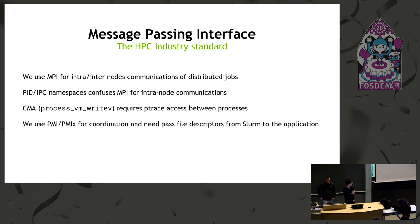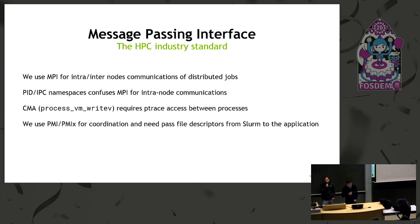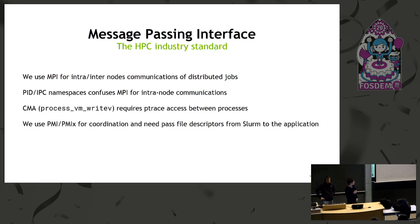A note about MPI — a standard framework for message passing used to communicate inside a node or across nodes. MPI doesn't like PID and IPC namespaces as we discussed. A nice benefit of a fully unprivileged runtime is that we can use cross-memory attach — the syscall process_vm_writev — which is extensively used by MPI and requires ptrace access. With traditional privileged runtimes it's hard to get that working. For coordination with PMI and PMIx, we pass file descriptors into the container by inheriting them from the parent by default.